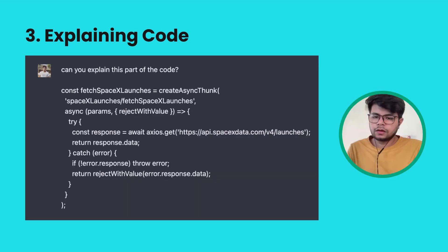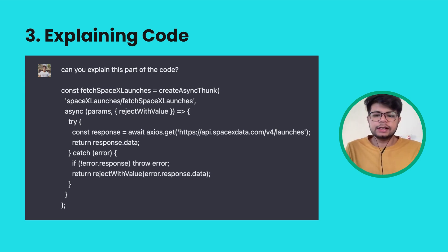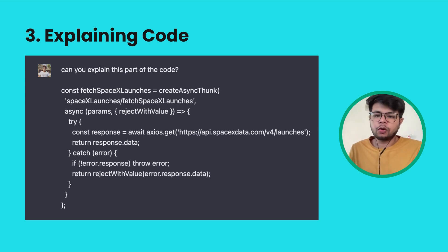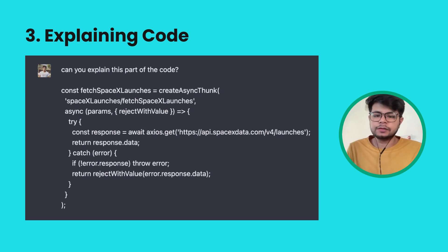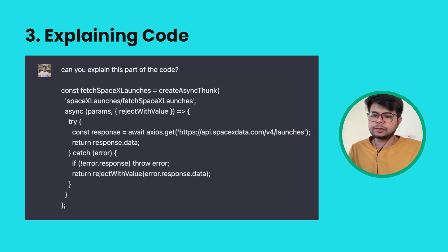Another way to utilize ChatGPT's power is by explaining code. As you can see in the example, I copied a small code snippet, pasted it in, and just asked ChatGPT to explain that part of the code. By your surprise, ChatGPT will go ahead and explain the whole code that you want.